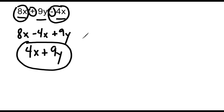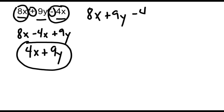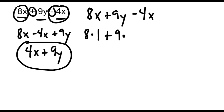Now, if you ever want to figure out if you have simplified your expression to the correct simplest form, what you could do is take your original expression and substitute any value of your choosing for x and y. For example, let's say we substituted the number 1 for x, and for the variable y we did a different value — let's say we substituted the number 2.